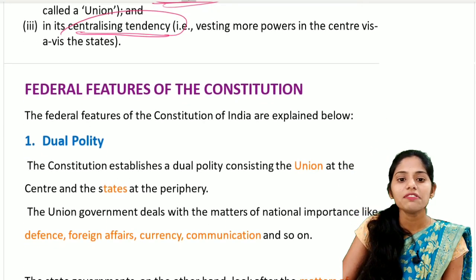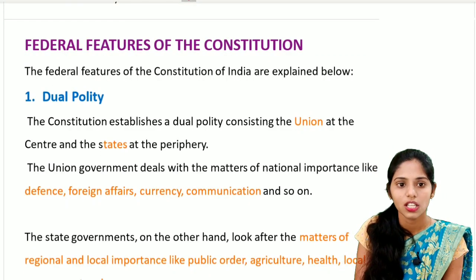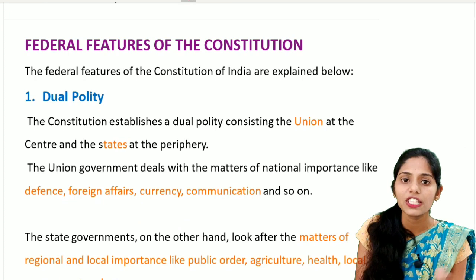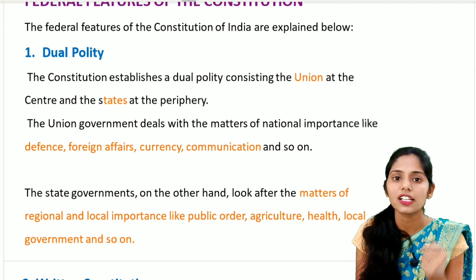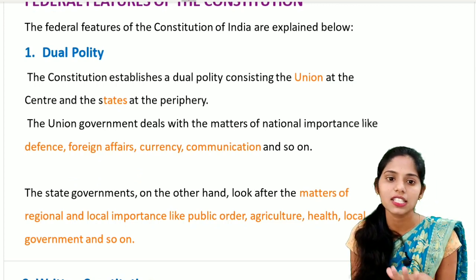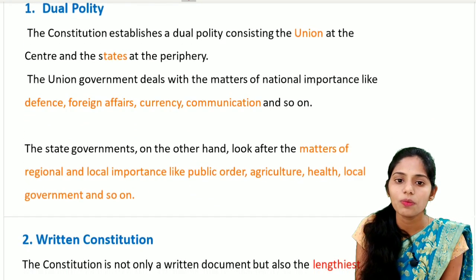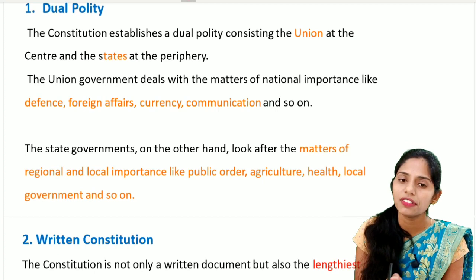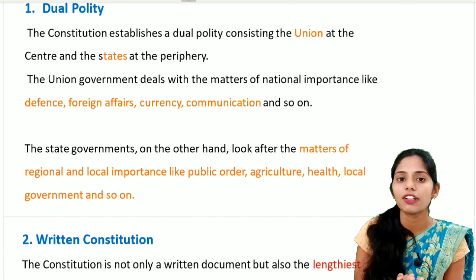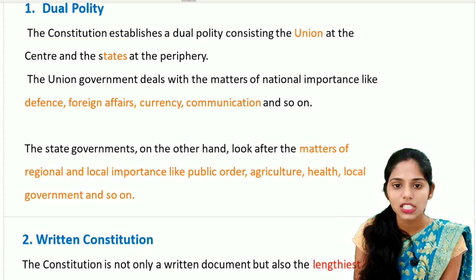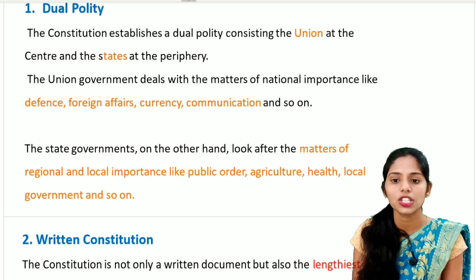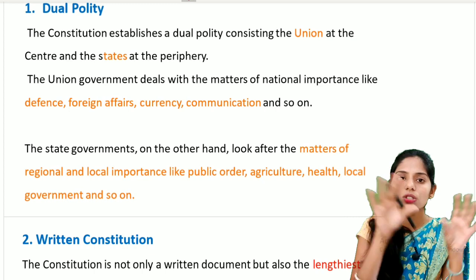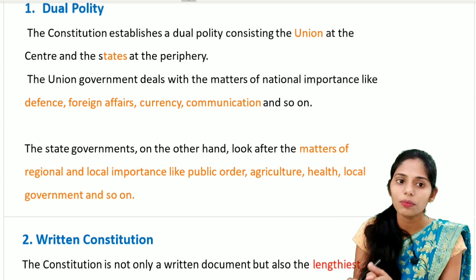The Indian Constitution has features of a federal system. The first feature is dual polity - government exists at two levels: the central (Union) government and the state government. The Union government deals with matters of national importance including defense, foreign affairs, currency, and communication. The state government looks after matters of regional or local importance including public order, agriculture, health, and local government.